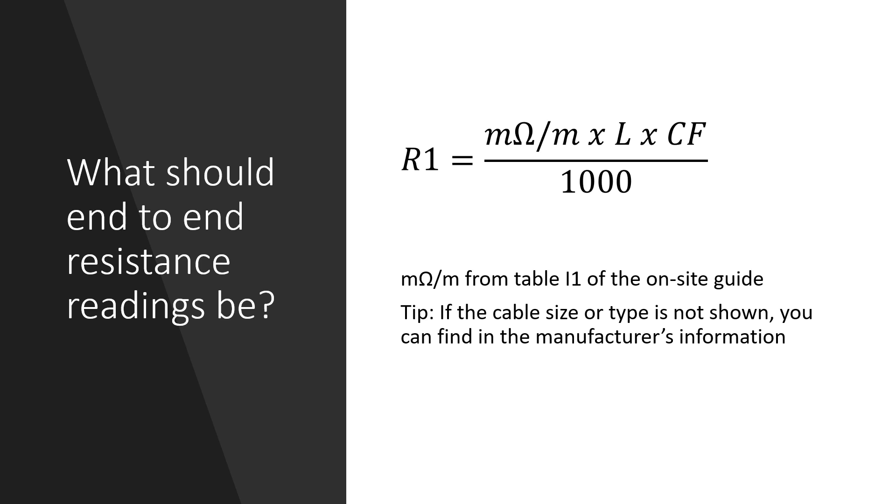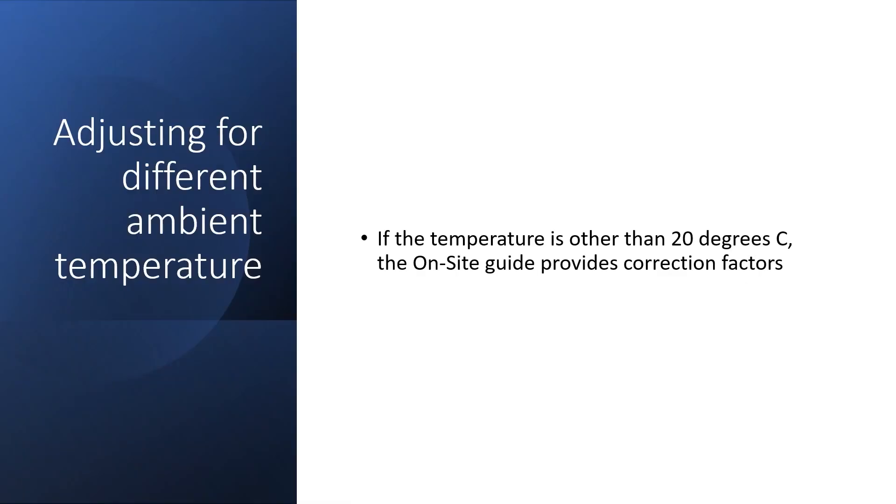The values on table I1 are based on an ambient temperature of 20 degrees C. If the ambient temperature is other than that there are correction factors on table I2 for 5 degrees, 10 degrees, 15 degrees and 25 degrees. For 20 degrees the factor is 1. If the ambient temperature is not shown on the table then there is a formula below that which shows how to adjust for different temperatures.